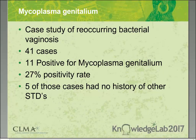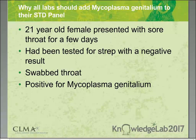In a review of forty-one recurring bacterial vaginosis cases, eleven were positive for MGEN alone — a twenty-seven percent positivity rate — with five having no history of any other STDs. A notable case involved a twenty-one-year-old female presenting repeatedly to urgent care with sore throats, always testing negative for strep. A nurse swabbed her throat for MGEN and it was positive. Because of this case, the clinic decided to start swabbing female patients with chronic persistent sore throats for MGEN.